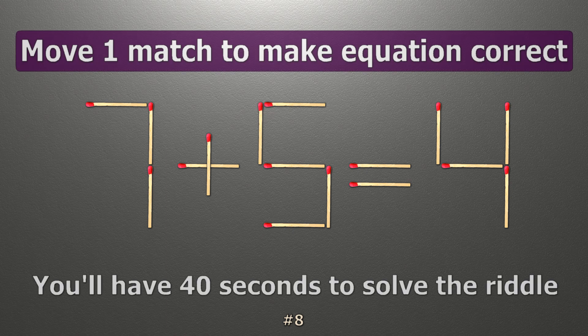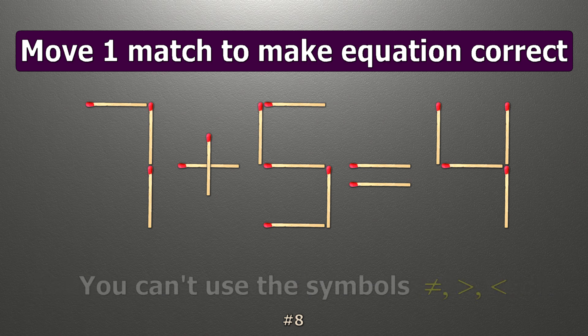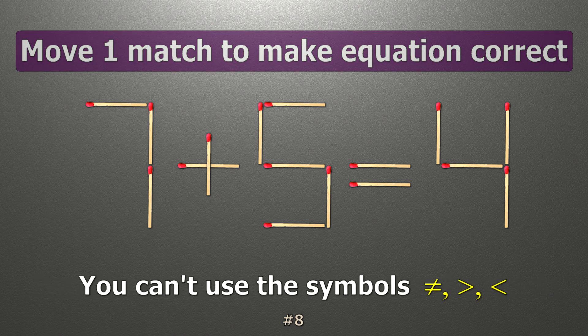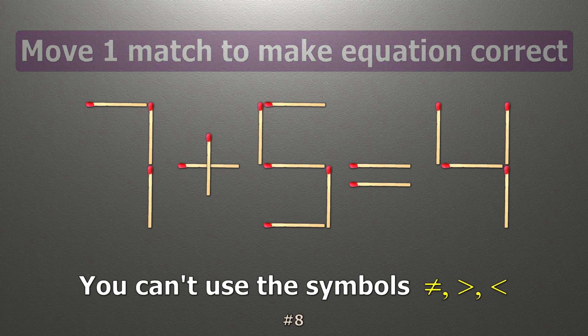We have the equality 7 plus 5 equals 4. Our equality is wrong. We need to move one match to make our equality correct.